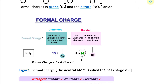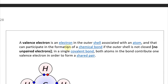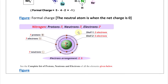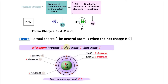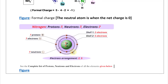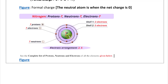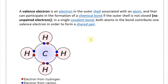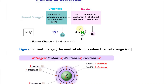A valence electron is an electron in the outer shell associated with an atom that can participate in the formation of a chemical bond if the outer shell is not closed — meaning there are unpaired electrons available. The valence, or valency, of an element is the measure of its combining capacity with other atoms. For example, carbon has a valence of four and hydrogen has a valence of one, so methane CH4 has four covalent bonds.